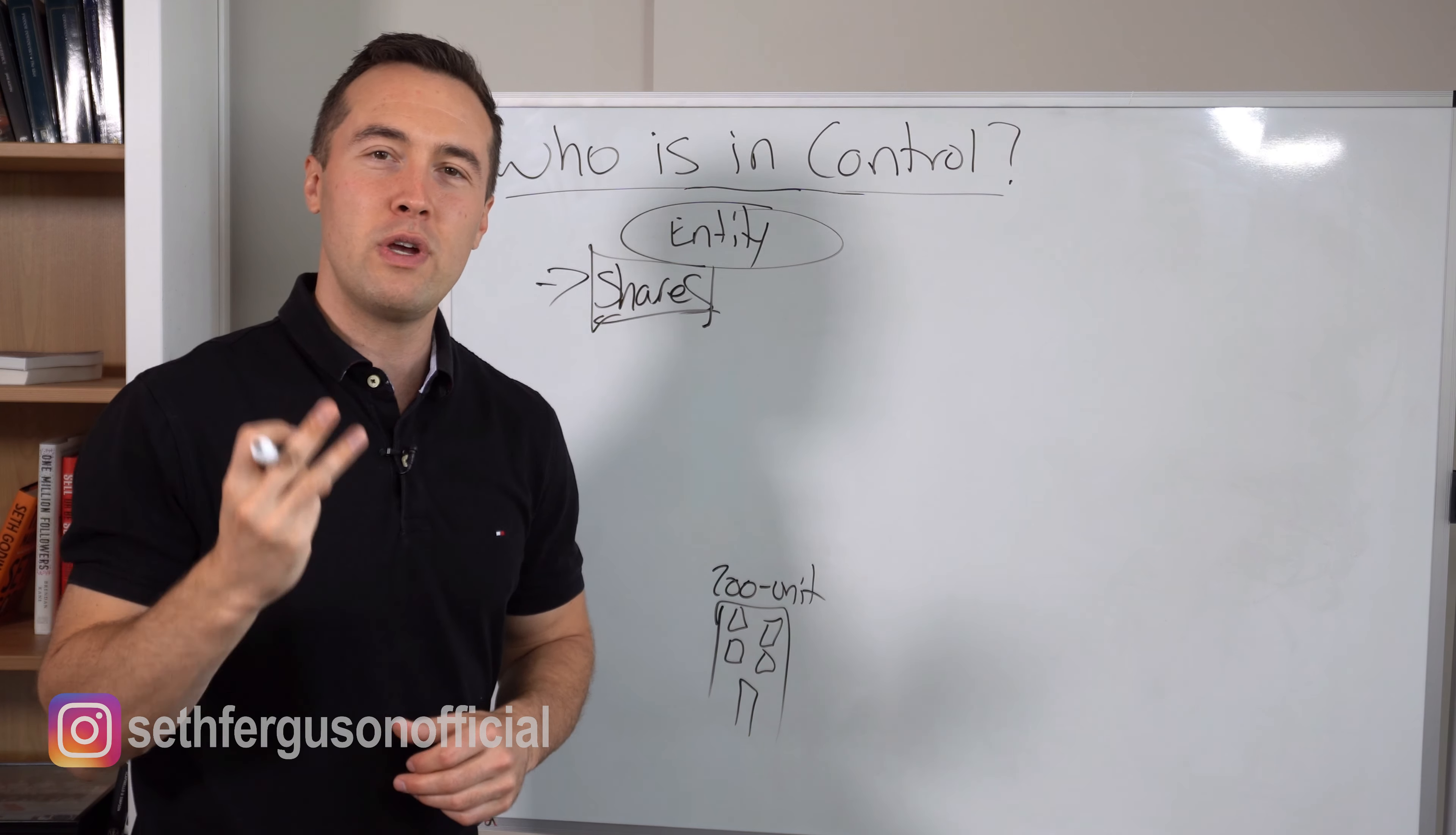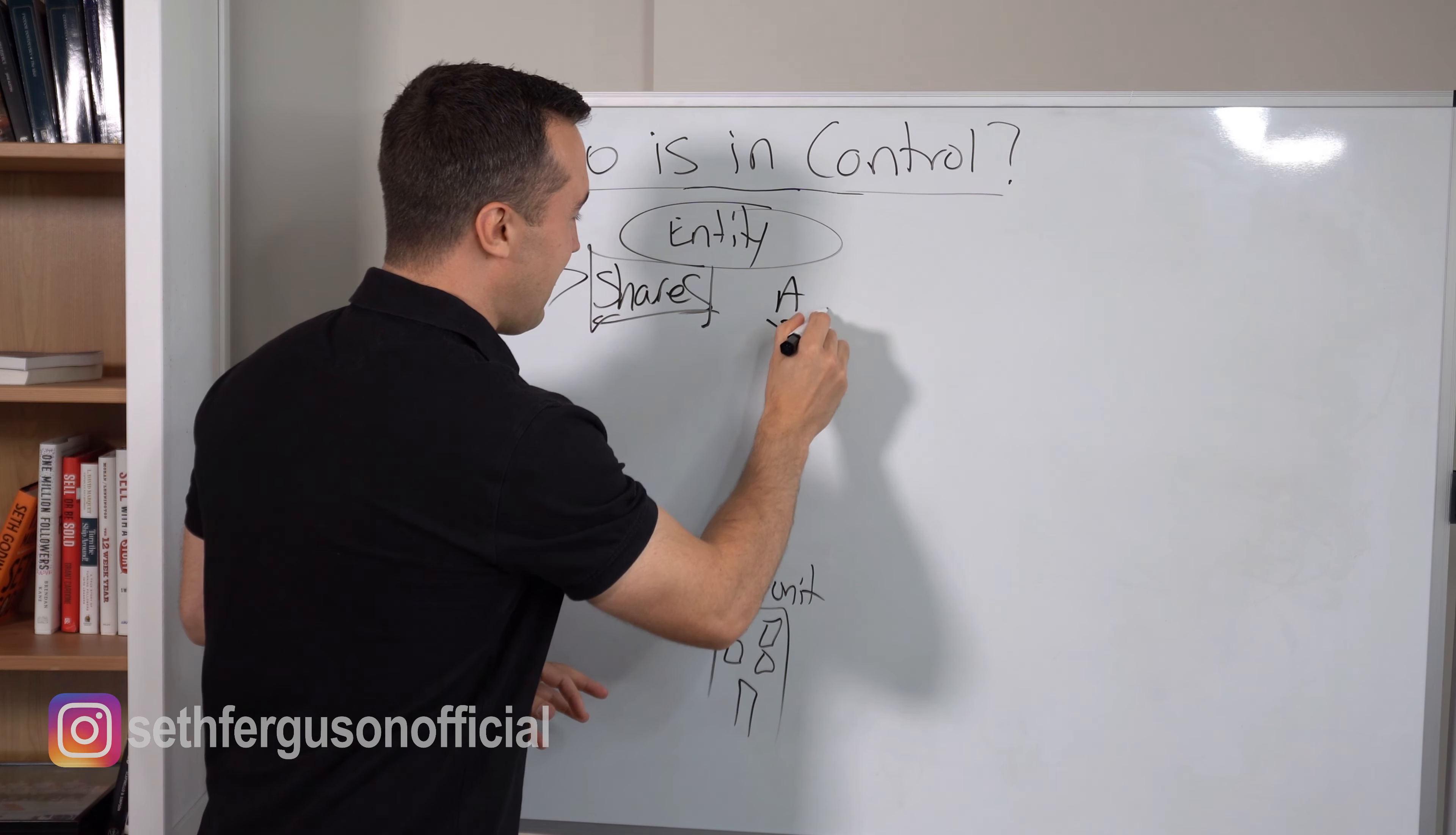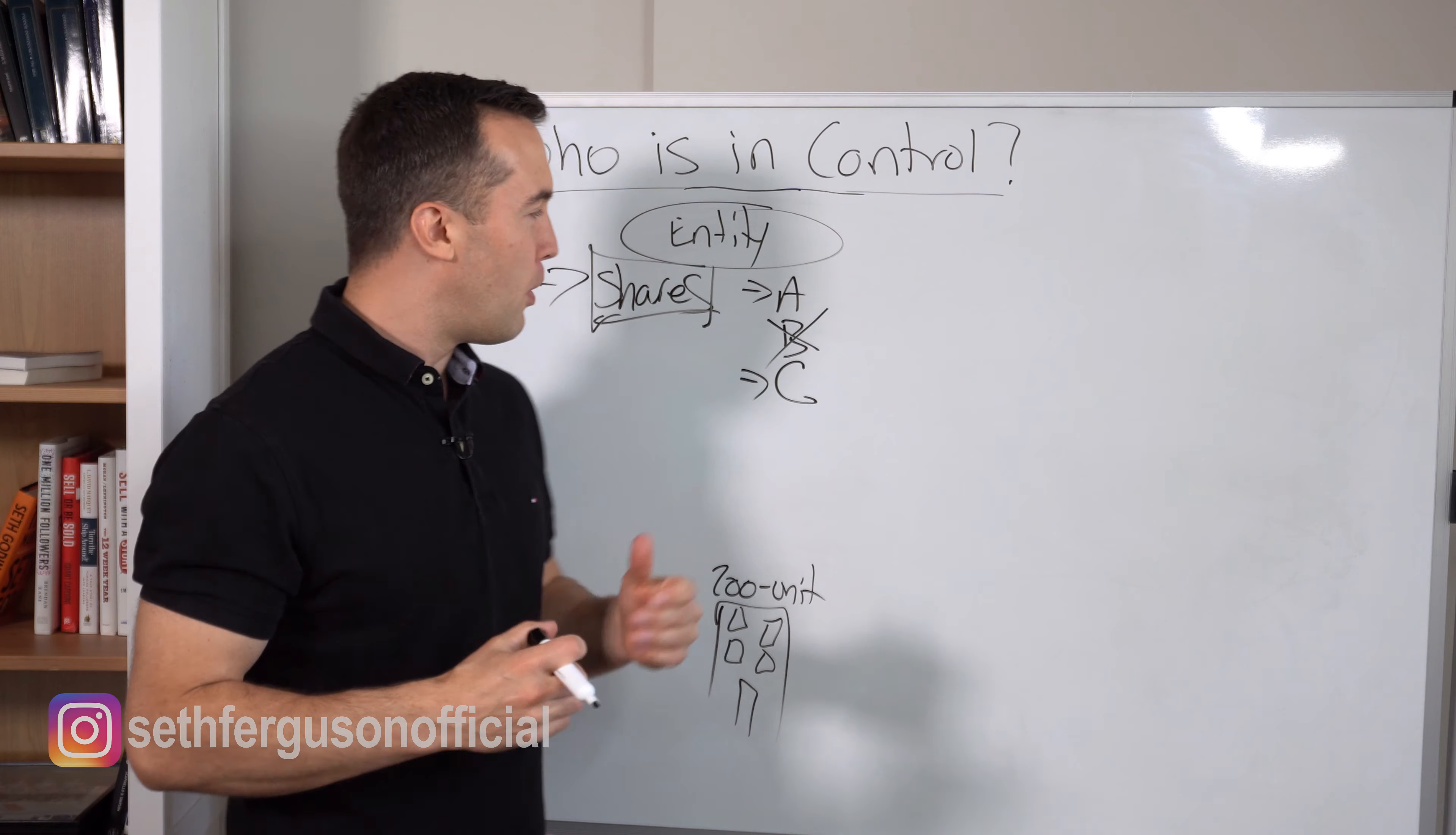Generally speaking, in the syndication you have three different classes of shares: you have a Class A, you have Class B, and Class C. For the sake of today, to keep things simple, we will eliminate Class B because these are a little bit of a wildcard share, and we will concentrate on Class A and Class C.